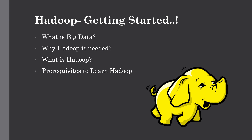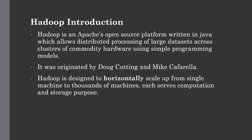That's why the logo is also a yellow elephant. Hadoop is Apache's open source platform, written in Java, and allows distributed processing and storing of large datasets across cheap commodity hardware which is easily replaceable. It was originated by Doug Cutting and Mike Cafarella. It is designed to scale up horizontally from a single machine to thousands of machines, which serve as a computation and storage layer.